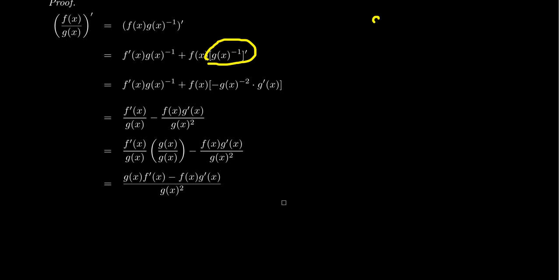Because when we look at this expression g of x to the negative one power, we should think of this in terms of function decompositions. There's two functions in play. There's the reciprocal function, u to the negative one, and then there's the inner function of g of x. So we put g of x inside of u. That's where this g of x to the negative one came from. So if we take the derivative using the chain rule here...